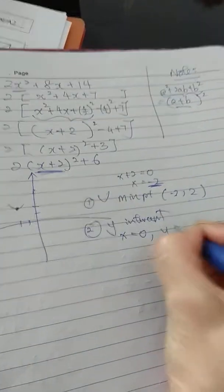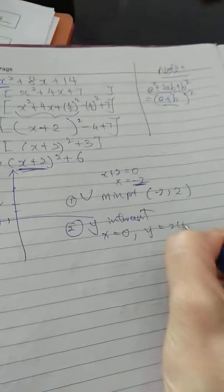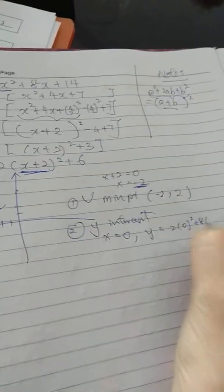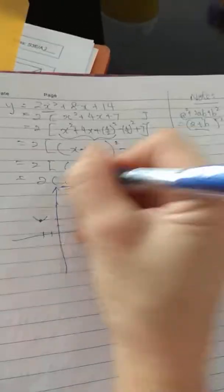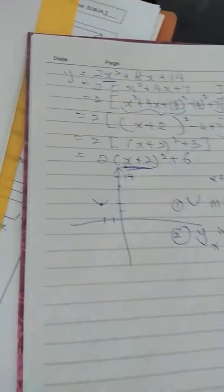The best is to put into the very first equation, so that is 2(0)² + 8(0) + 14. I know that it is 14. So now I mark 14 on the graph.